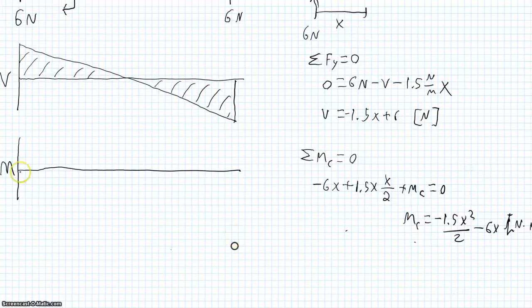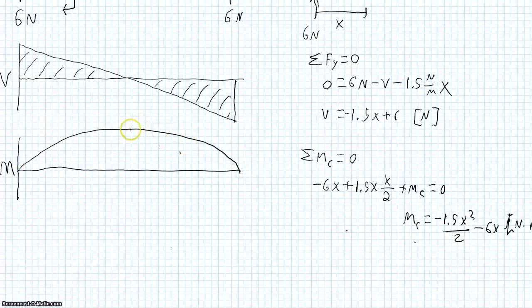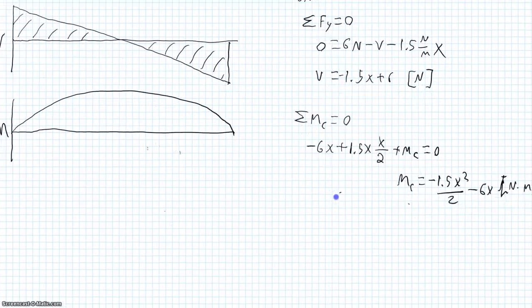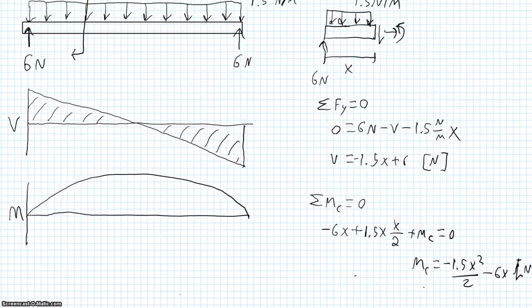So this is going to be a parabolic function. The maximum occurs in the middle of the beam. And again, we can also look at this as the integral of the shear diagram.